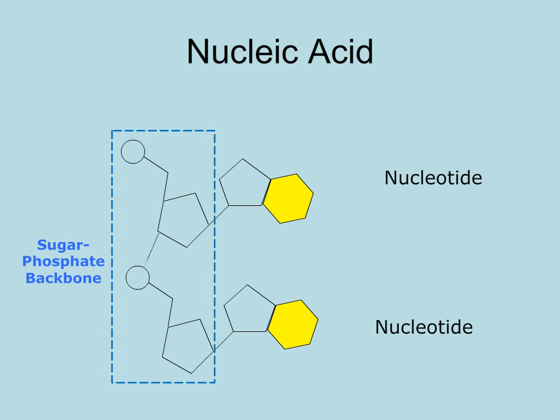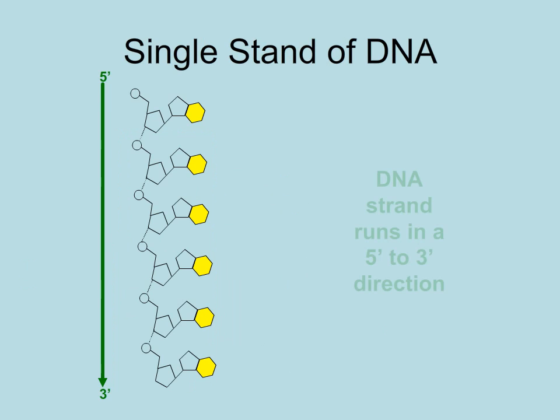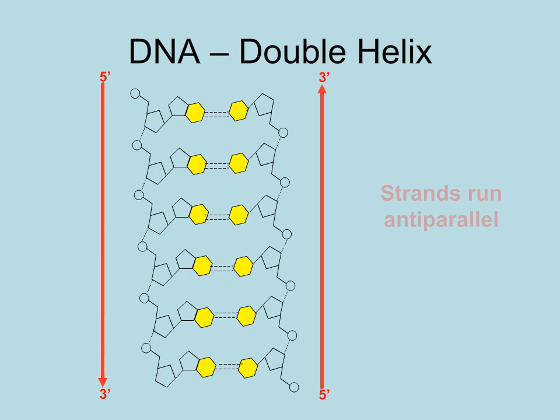The bases are not part of the backbone and can form bonds with other nucleic acid strands. Nucleic acid strands, such as DNA, run in a 5' to 3' direction based on the sugar orientation. DNA is double-stranded, so the other strand must run in the opposite direction for the bases to properly interact. We say the strands run anti-parallel to one another.